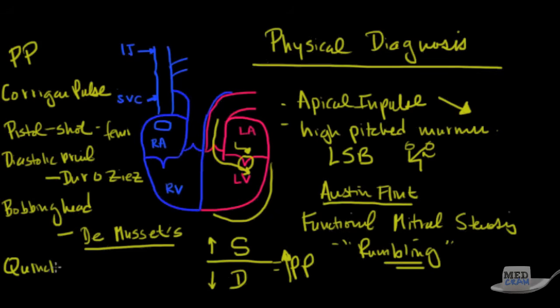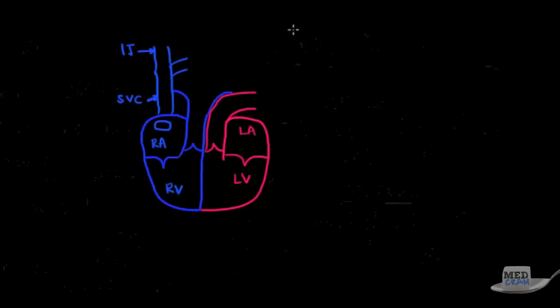Another thing is Quincke's pulse. Quincke's pulse is when you look at the nail bed of your fingers, and you see that there's a blushing and blanching. So these are all signs of aortic insufficiency. Of course, you're going to order an echocardiogram to make the final diagnosis on that, but interesting nonetheless.